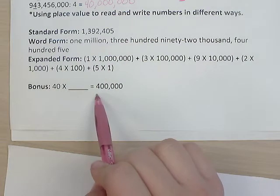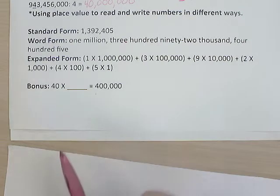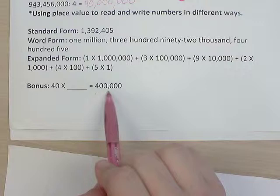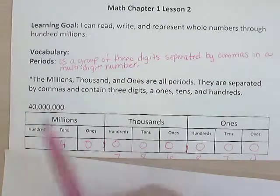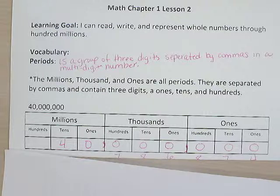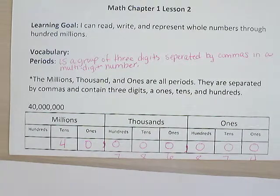And then I have a little bonus down here. The bonus is 40 times what equals 400,000? See if you can answer that bonus question. I will have the answer to that bonus question in our next lesson. So again, our learning goal was I can read, write, and represent whole numbers through 100 millions. So go ahead and complete these notes. You can rewind and rewatch this as much as you need. And then you're going to put them into the math section of your interactive notebook binder. And you can refer to these as you're practicing.